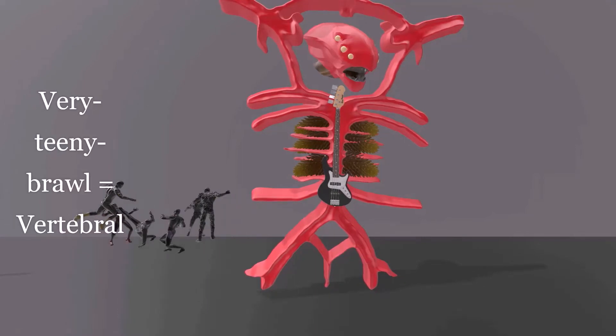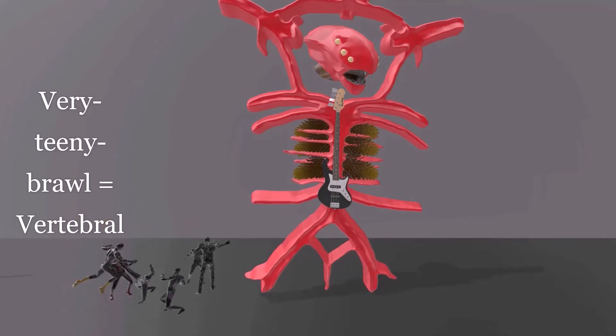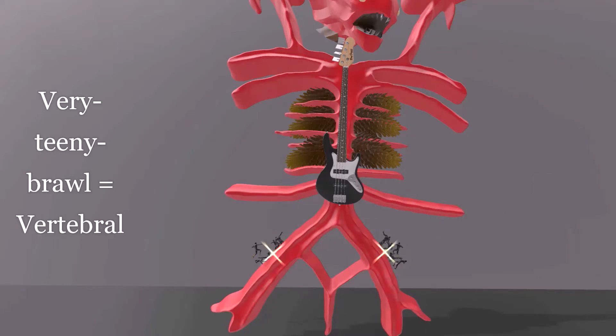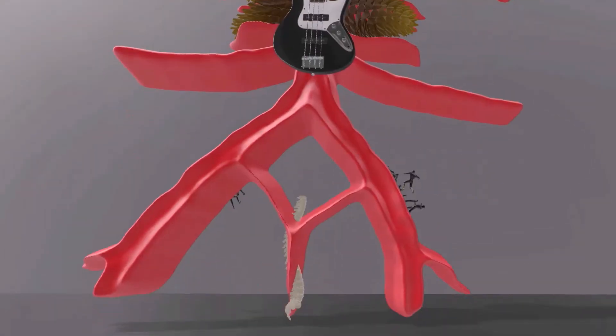The very teeny brawl for vertebral. This is going to represent the vertebral artery. And the scary red dude over here put the very teeny brawl guys right here, which reminds us that this is the vertebral artery. Then right under him, he put this spine, maybe it helps him balance or something.